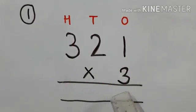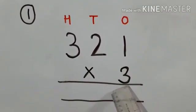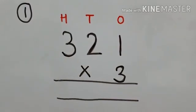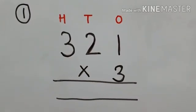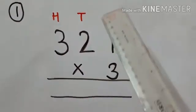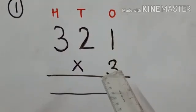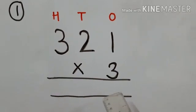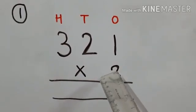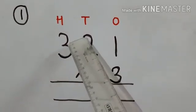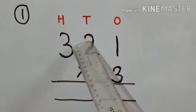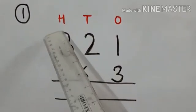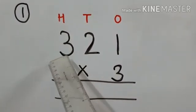This is our first question. We are having 321 and we have to multiply it with 3. I have already written the places — ones, tens, and hundreds. First we have to multiply with the ones-digit number, then with the tens-digit number, and next with the hundreds-digit number.